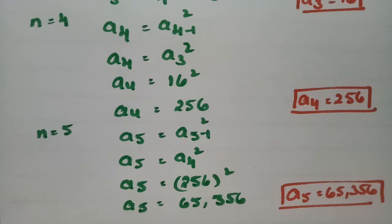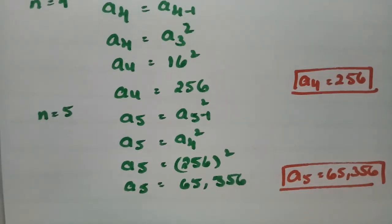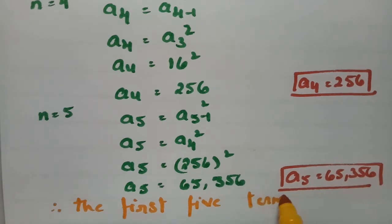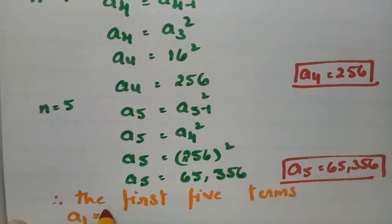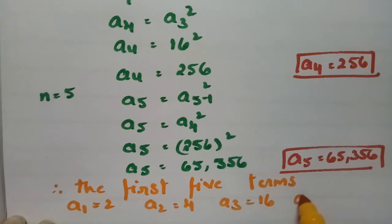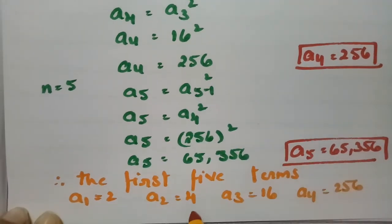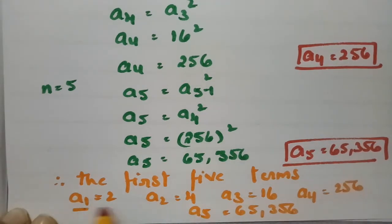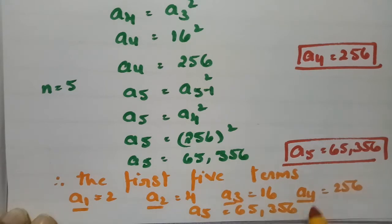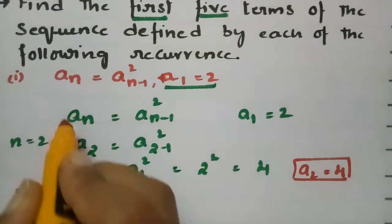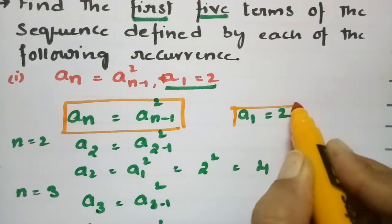Therefore the first five terms are: a_1 = 2, a_2 = 4, a_3 = 16, a_4 = 256, and a_5 = 65,356. These are all the values calculated using this recurrence relation with initial condition a_1 = 2. Now coming to the second question.